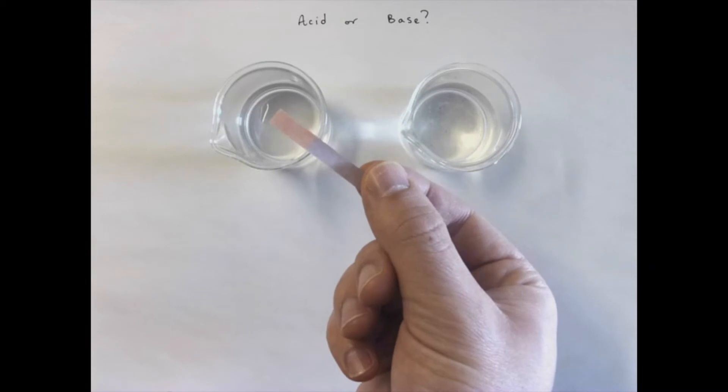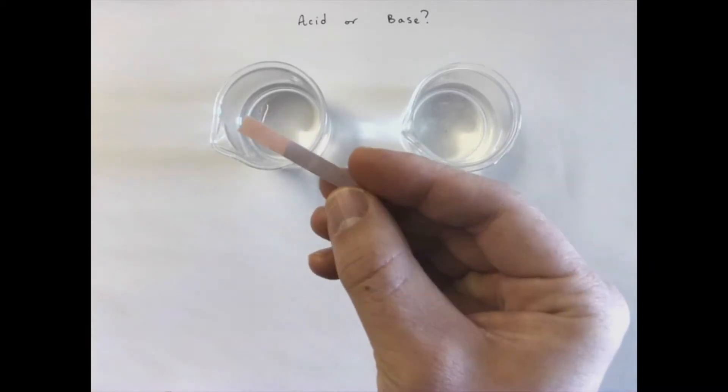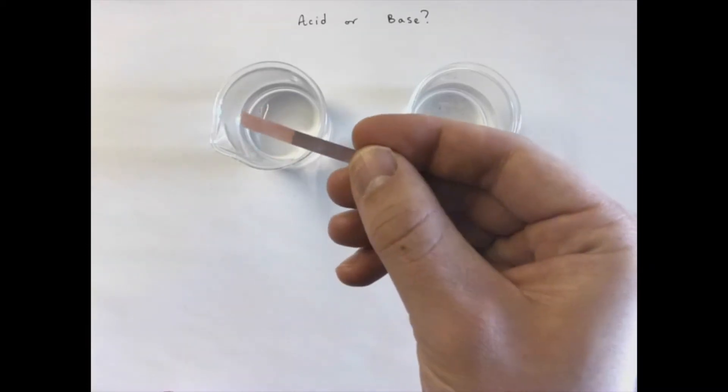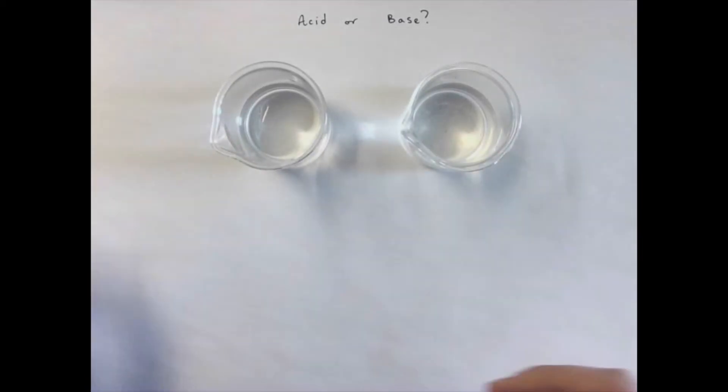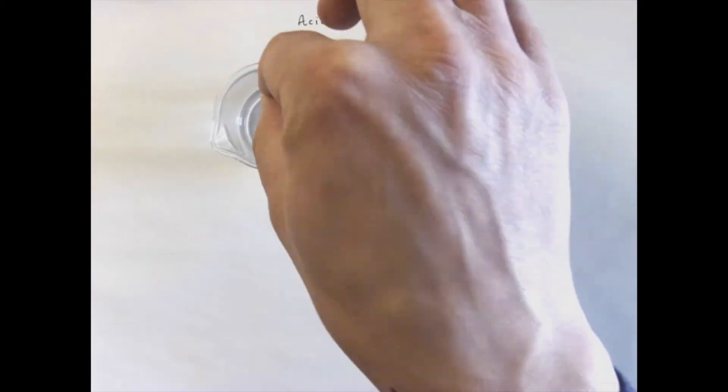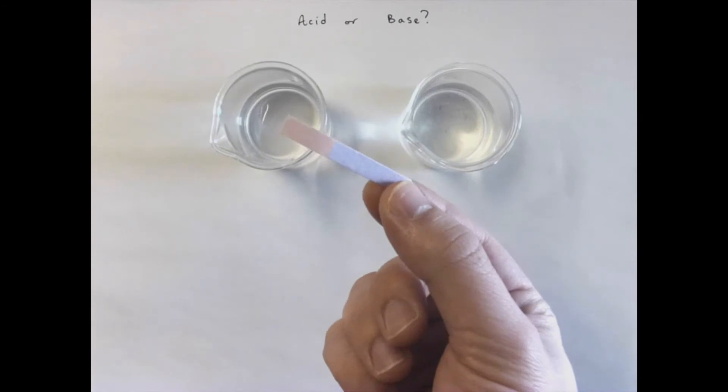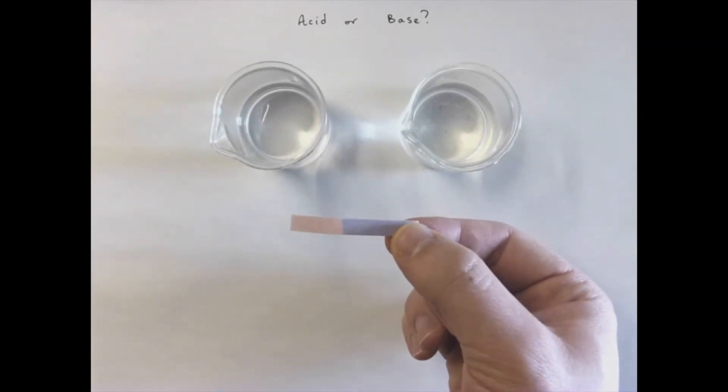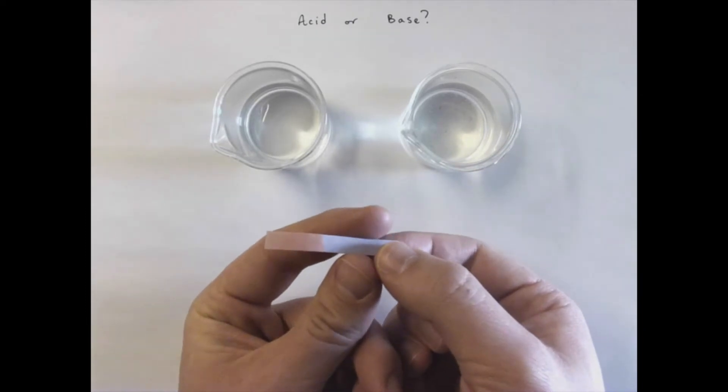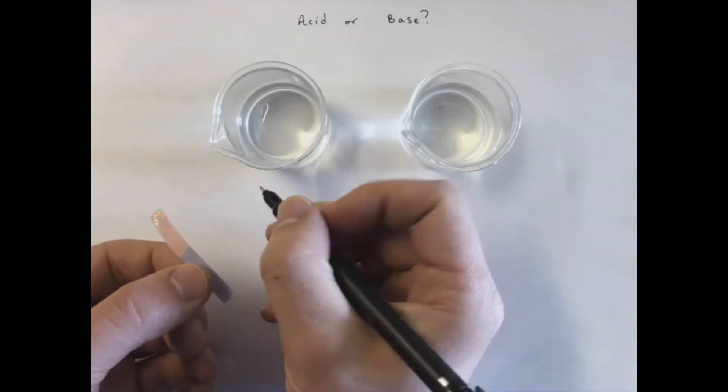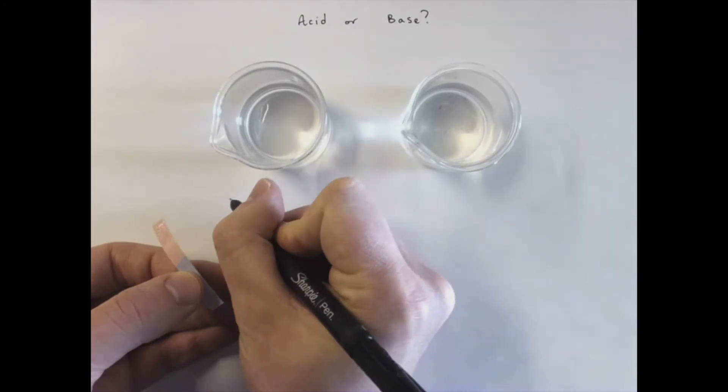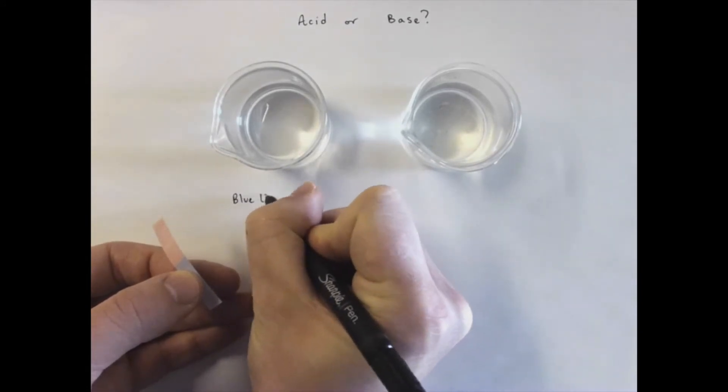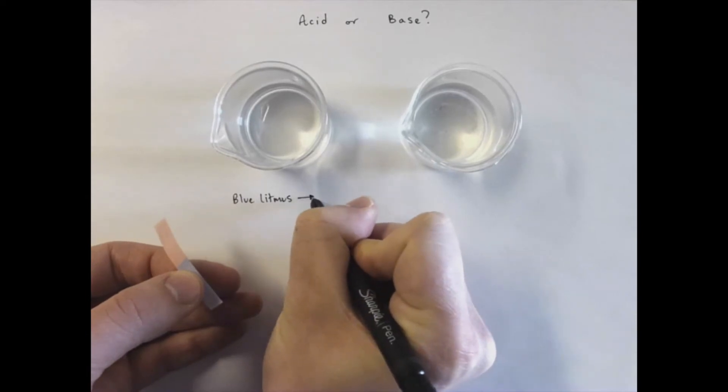And I'm going to take some blue litmus paper. I'm going to stick it in the acid and what happened there? Oh, it looks like it turned pink. So when I take blue litmus paper and put it in this particular solution, it turned red, kind of like a reddish pink.